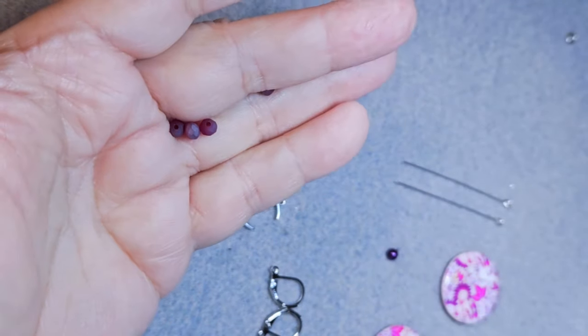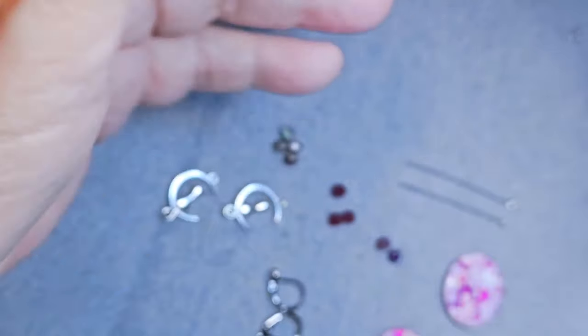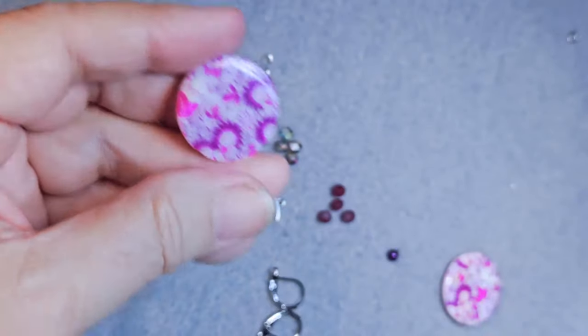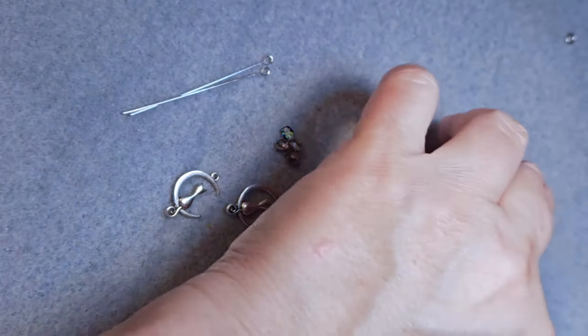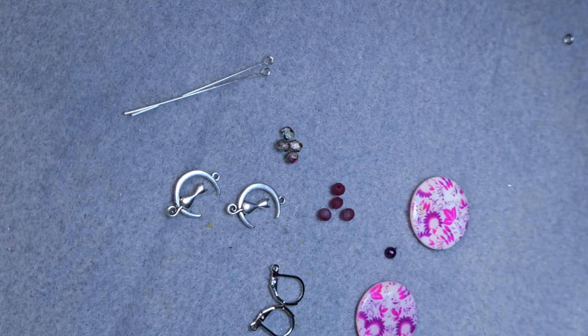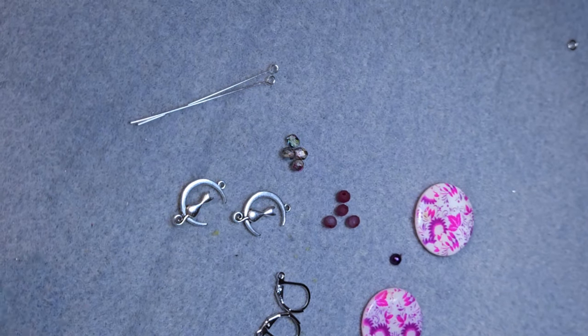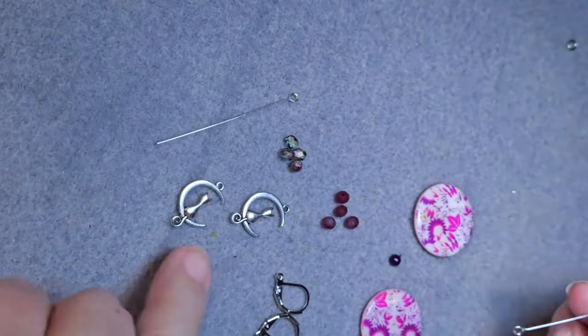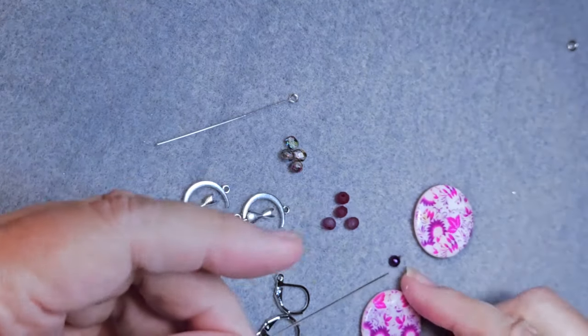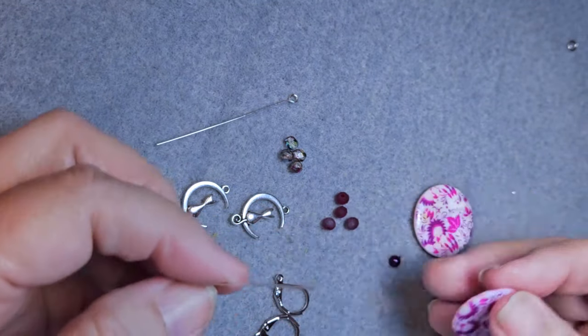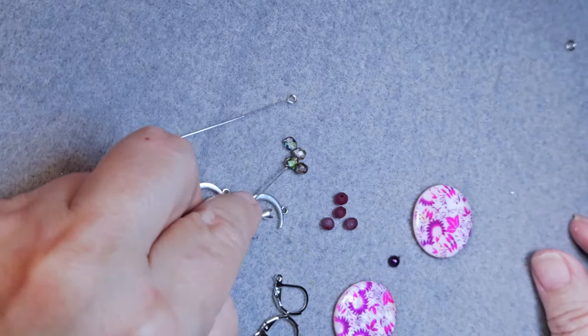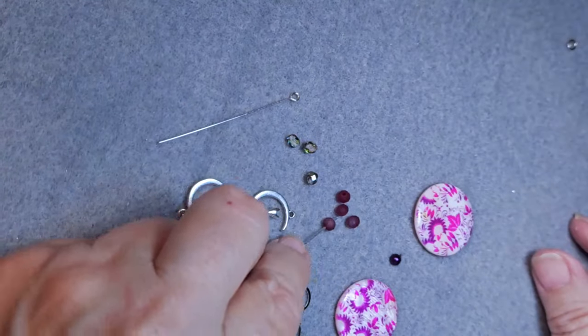So for my own stash I have pulled these matte garnet glass rondelles with AB flash and I'm going to use those with this earring. And then from the Jesse James we have these lovely acrylic flower discs. These are gorgeous. And we're going to make some beautiful earrings with them. We're also going to need some eye pins. These are three inch eye pins and I'm going to use the Cat on the Moon charm. And we'll need some lever backs. All three of these earrings will be very simple earrings to do but they're beautiful.